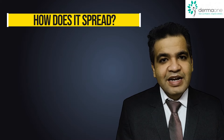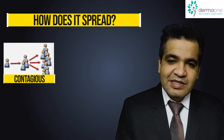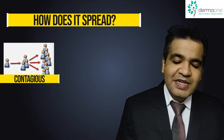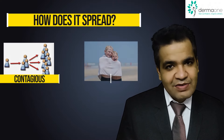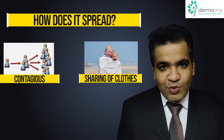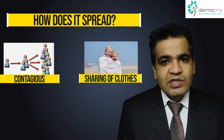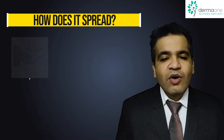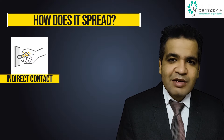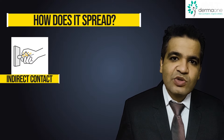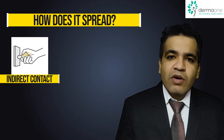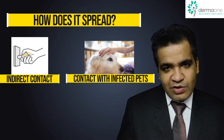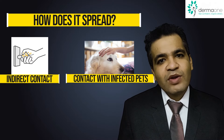Now let us understand how you get this infection. It is a contagious disease, meaning it can spread from one person to another. For example, if somebody is sharing your towels, they can get it from you, or if you are using common clothes or there is close physical contact, that can lead to spread of this infection. Also, if you are walking barefoot and someone with a foot fungal infection is present, you can get it. It can also spread from pets — if your cat or dog has it, you can get it from them.